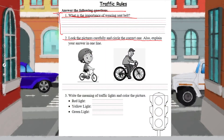Then look at the picture carefully and encircle the correct one, also explaining your answer in one line. One picture shows a boy wearing a helmet and the other shows a boy not wearing a helmet. You have to circle the picture that shows the boy following the traffic rule, and give a brief explanation for why you chose it.